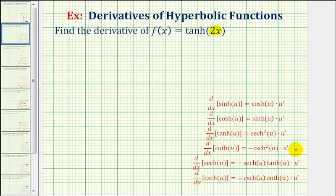If we take a look at our derivative formulas, here's the one involving the hyperbolic tangent function. Notice how this derivative formula already includes the chain rule, where u is equal to the inner function, and therefore the derivative with respect to x is a product where the first factor is the derivative of the outer function, and the second factor, u prime, is the derivative of the inner function.